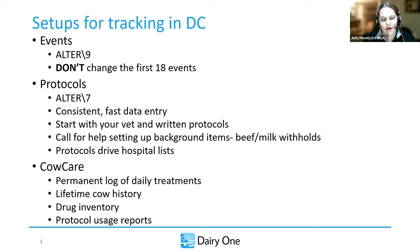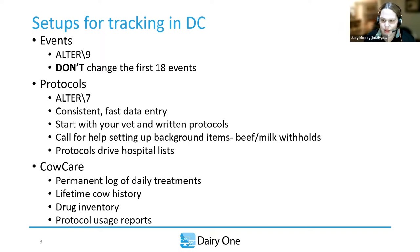After we get our events set, the next piece is the protocol. We can access them in alter backslash seven. Protocols allow us consistent, fast data entry, and that consistent part is what's important. When we start pulling analysis, we can look at what kind of protocols were used for the cows and how often we're using them.